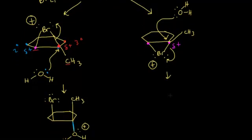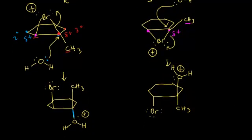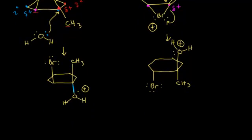Drawing the result of this nucleophilic attack: the oxygen is now bonded to the right carbon with two hydrogens and a lone pair giving it a plus one formal charge. When oxygen attacked from below, it pushes the methyl group down relative to the plane of the ring — so the methyl group is now down at that carbon. The bromine swings over to the carbon on the left.